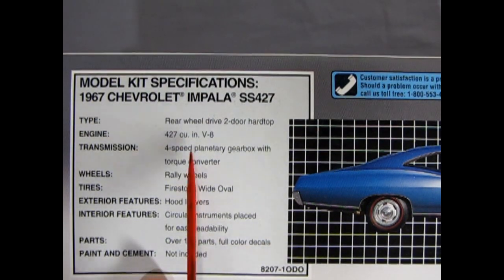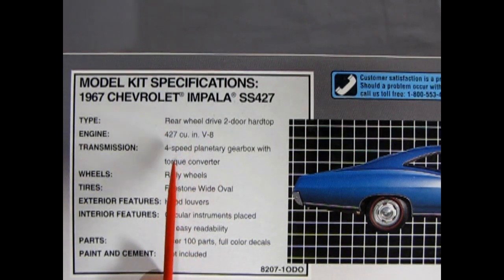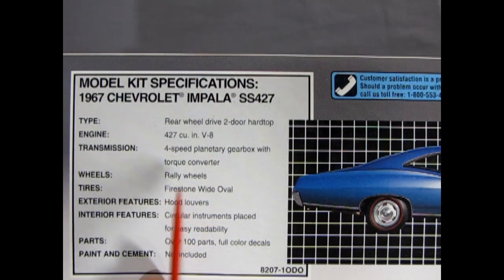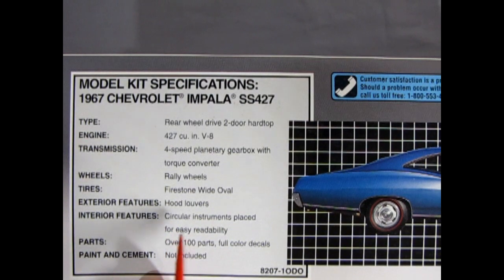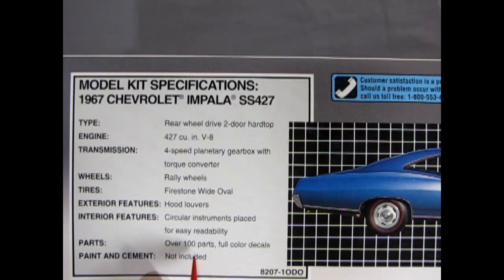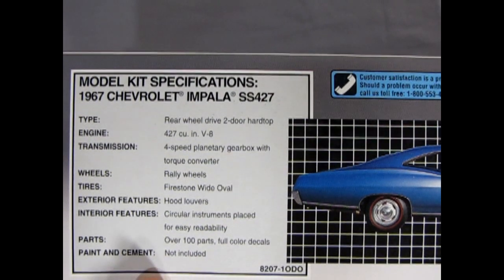We get a rear-wheel drive two-door hardtop with 427 cubic inch engine, 4-speed planetary gearbox with a torque converter, rally wheels, firestone wide ovals, hood louvers, circular instruments, place for easy readability, over 100 parts, full-color decals, paint and cement is of course not included.